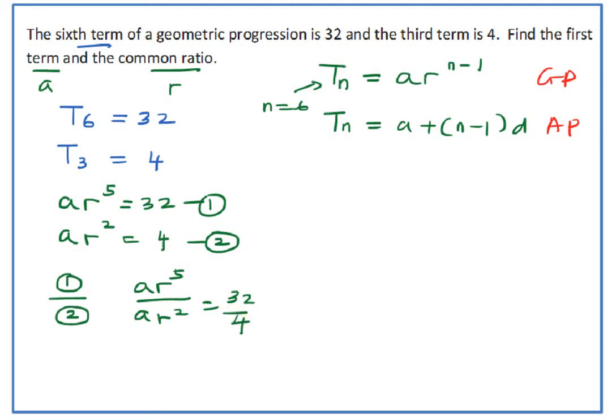You can cancel off A, the first term. So now you have r^3 equals 8, so r equals 2. This is the common ratio.